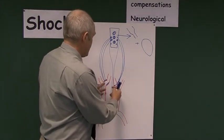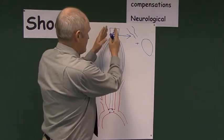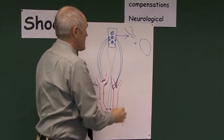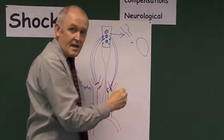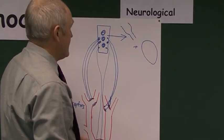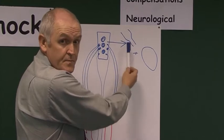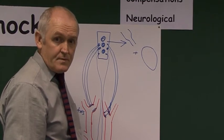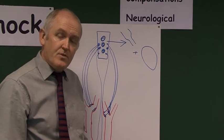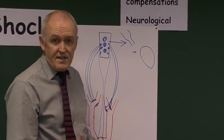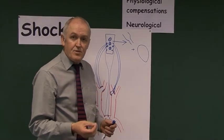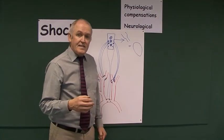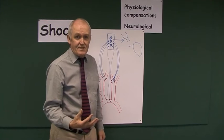So if blood pressure drops, messages go to the medulla oblongata, which sends out messages to blood vessels all around the body to vasoconstrict, and messages to the heart to increase cardiac output and rate. This increases blood pressure by increasing peripheral resistance and cardiac output. At the same time, sympathetic nerve impulses go to the kidney, which increases the amount of renin produced, and sympathetic impulses also go to the adrenal medulla — the inside part of the adrenal gland.